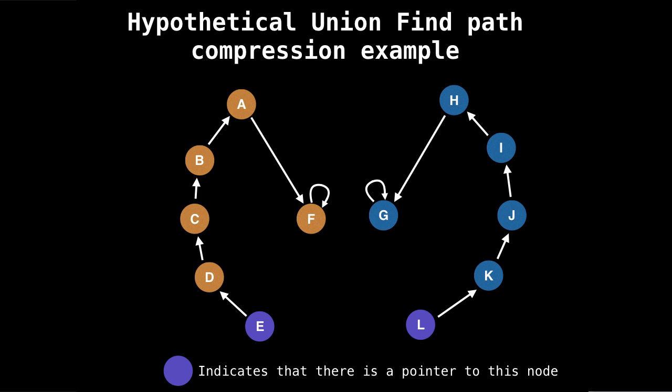Well, we would have two pointers that start on E and L, and what we would want to do is find the root node of E, and find the root node of L, and then get one of them to point to the other. But with path compression, we do that, but we're also going to do something else.